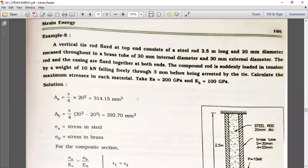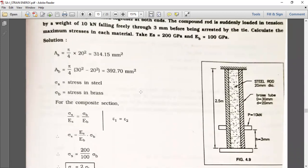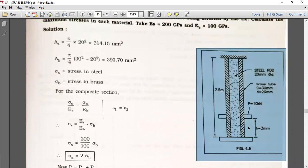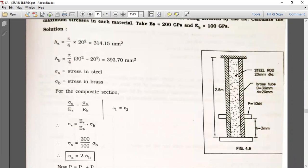Now we can first calculate the areas. Before going to the solution, let's simplify the figure. Here, a steel rod which is 20 mm diameter is covered with a brass tube which has 30 mm outer diameter and 20 mm inner diameter. Load is P, 10 kilonewton, falling from height 3 mm, and the total length of the bar is 2.5 meters.